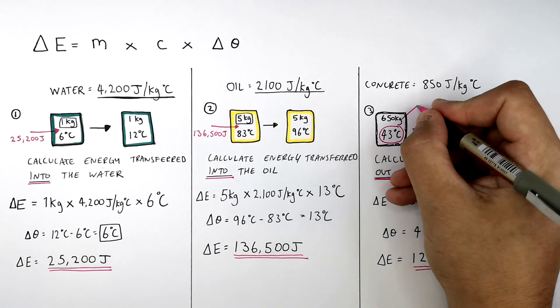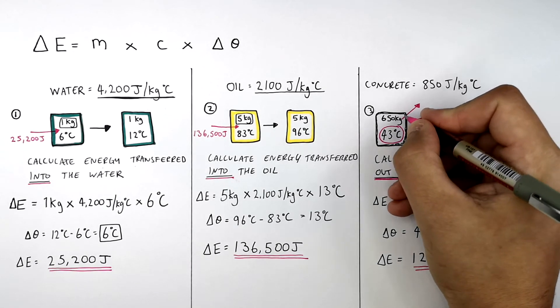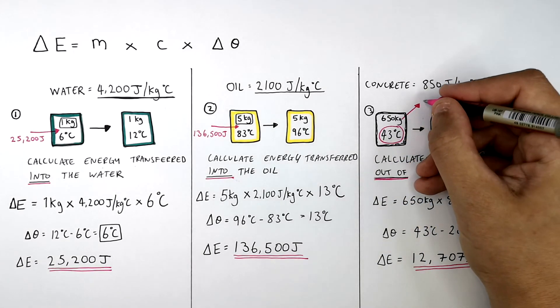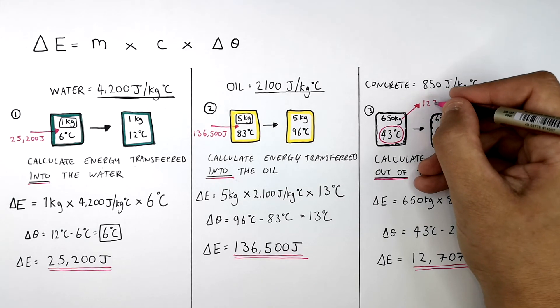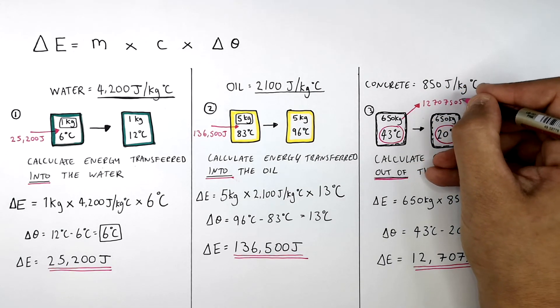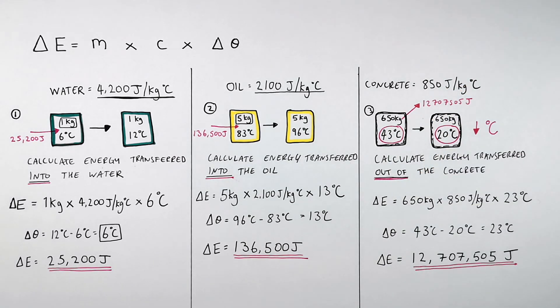In the first two examples, energy was transferred into the thermal energy stores of the objects. In this final example, energy was transferred out of the thermal energy store of the concrete.